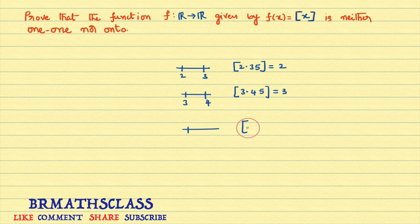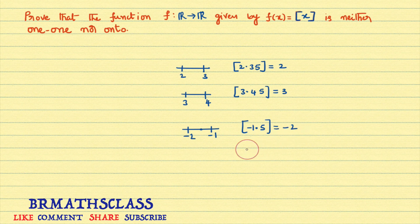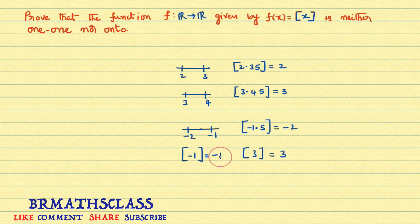Now, step(-1.5): many students confuse and write -1, but that is wrong. Since -1.5 lies between -2 and -1, the left-hand side number is -2, so step(-1.5) = -2. When the argument is an integer, like step(3) or step(-1), the answer is the integer itself. Notice that whenever we take any real number, the step function always gives an integer — this is an important point we will use in the solution.